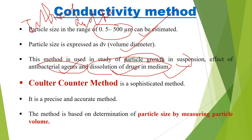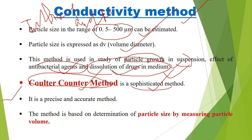What is the technique in the conductivity method? The apparatus we use is called the coulter counter apparatus. It is a sophisticated and somewhat complex method, but it is precise and accurate. Accuracy is very well maintained when we determine particle size using this method.